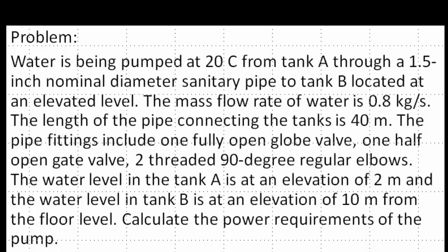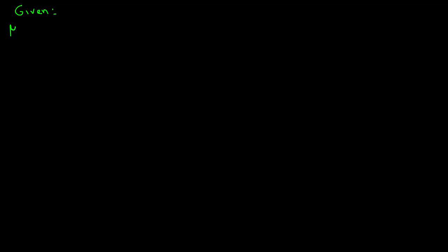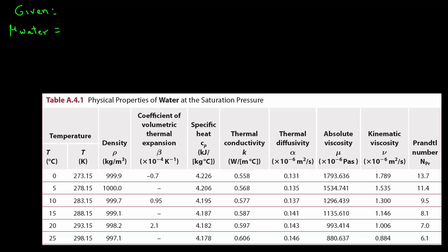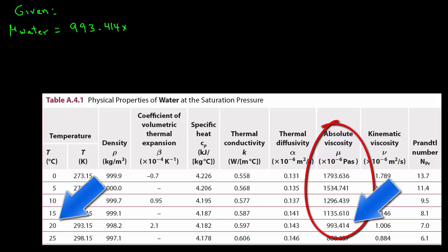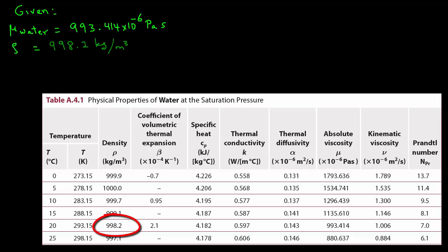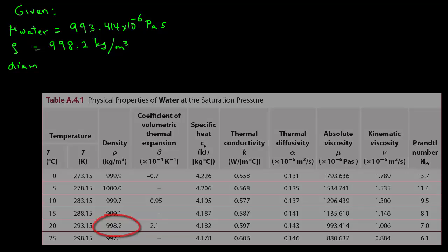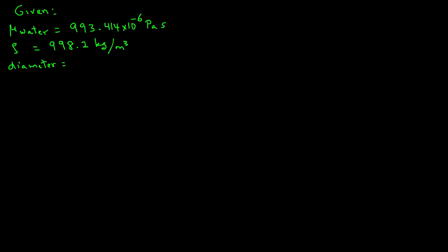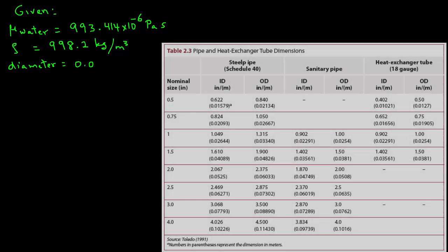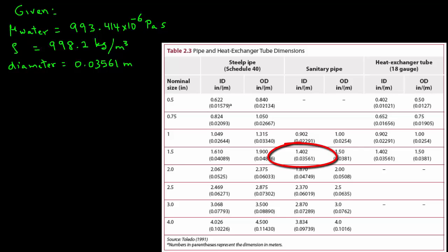We are to calculate the power requirements of the pump. We will use a table to determine the viscosity and density of water at 20 Celsius. From the table, the viscosity of water is 993.414 × 10⁻⁶ Pascal seconds. The density is 998.2 kilograms per cubic meter. The diameter of the pipe is 1.5 inch, which is equivalent to 0.03561 meters.